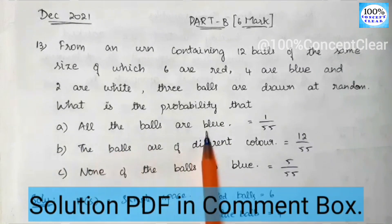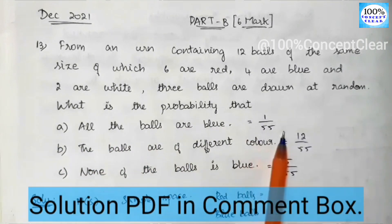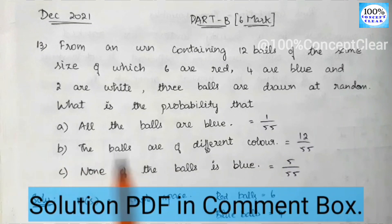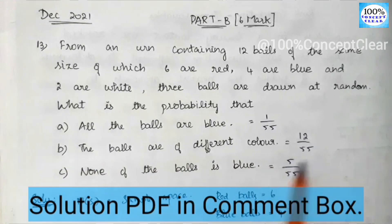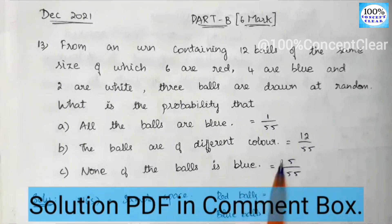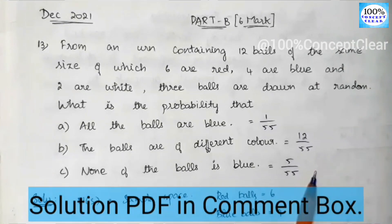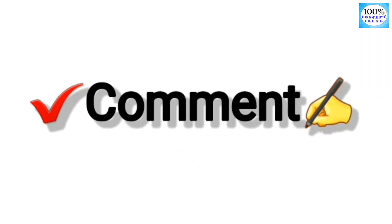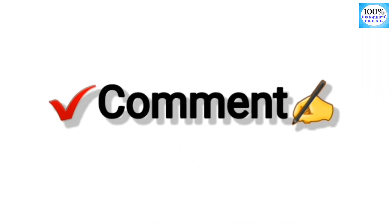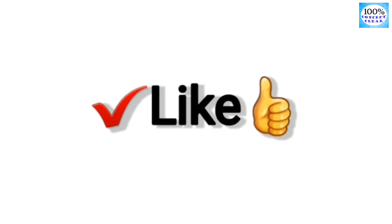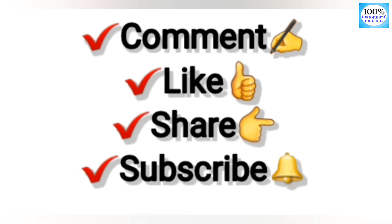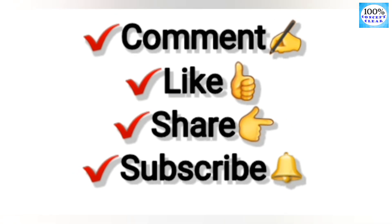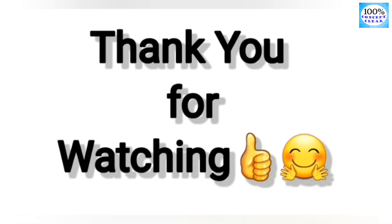Final answers: A) All the balls are blue — probability is 1 by 55. B) All the balls are of different color — probability is 12 by 55. C) None of the balls is blue — probability is 5 by 55. If you have doubts, please like this video and share it with your friends. Thank you for watching.